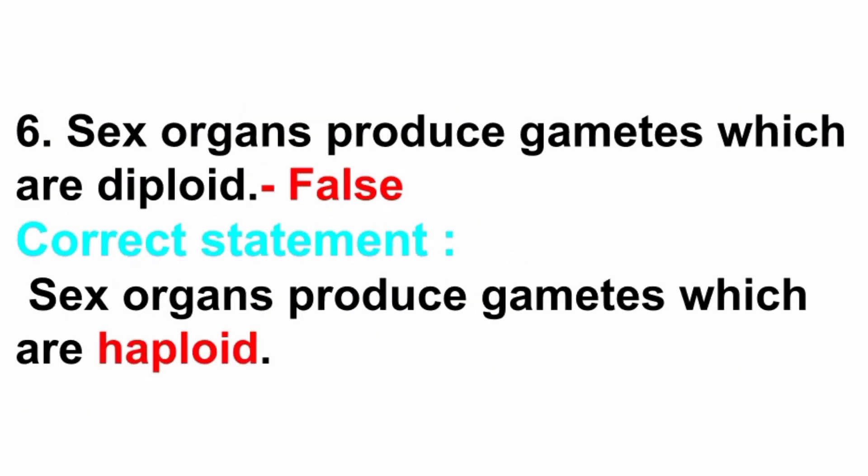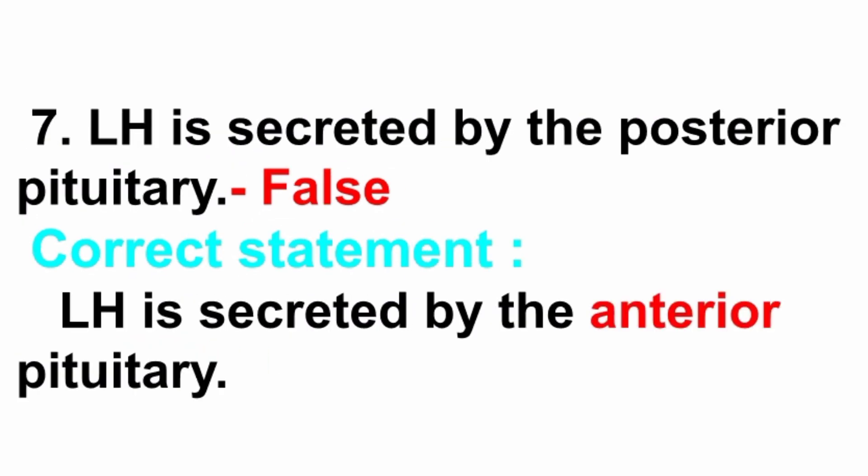Sixth: sex organs produce gametes which are diploid — answer is false. Correct statement: sex organs produce gametes which are haploid. Seventh: LH is secreted by the posterior pituitary — answer is false. Correct statement: LH is secreted by the anterior pituitary.